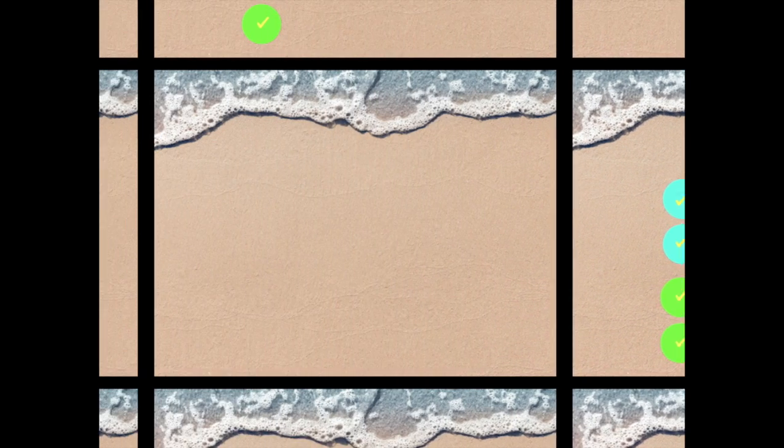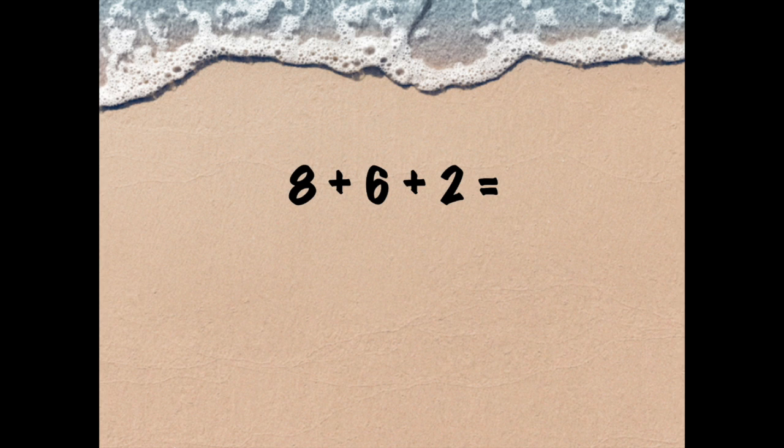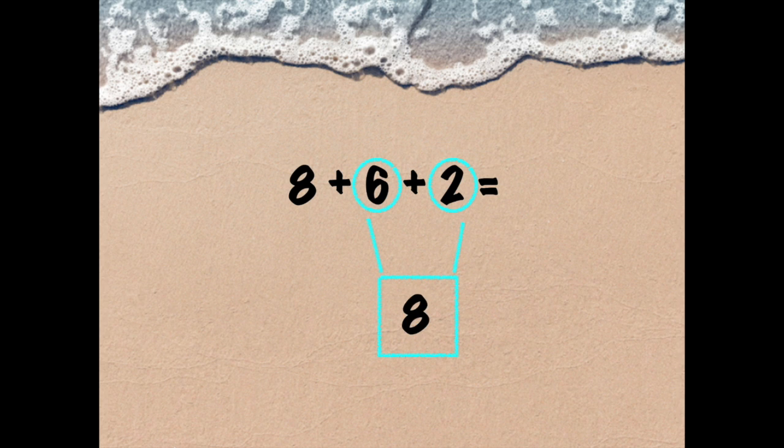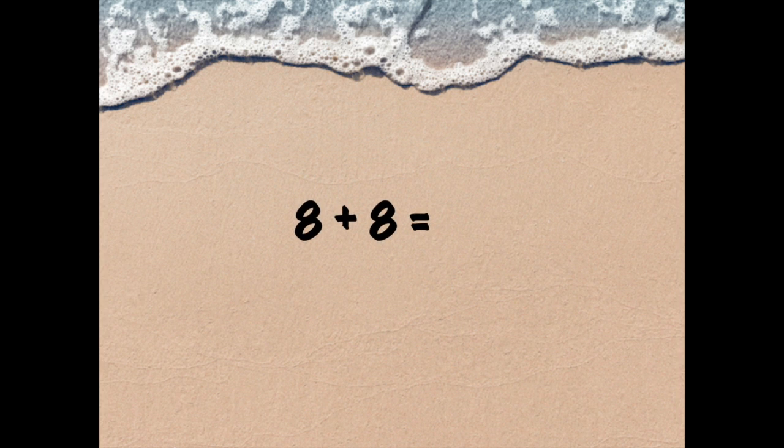But that's not the only way I could solve it. Let's try another way: 8 plus 6 plus 2. I know that if I count up by 2 from the number 6, I'll get the number 8. My new equation is 8 plus 8. If I know my doubles, I know that 8 plus 8 equals 16. I didn't even have to draw a picture.